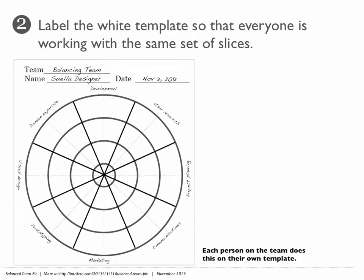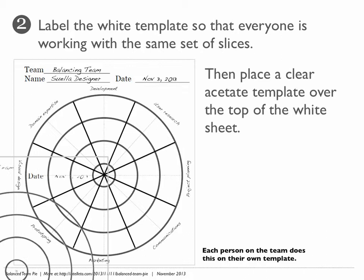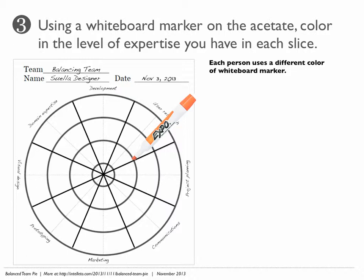Then you place a clear acetate template over the top of the white sheet. Next, using a whiteboard marker on the acetate, color in the level of expertise you have in each slice. Each person uses a different color of whiteboard marker.